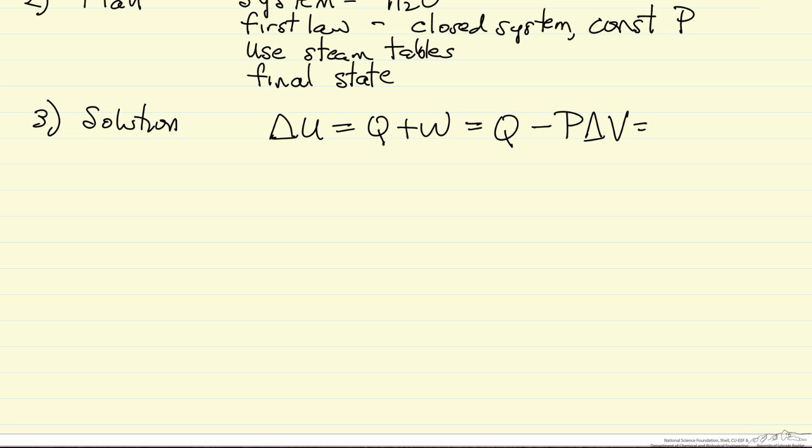And I'm going to rewrite this as minus delta PV, and the reason I'm doing that is because I can now rearrange this equation: delta U plus delta PV is equal to Q, and delta U plus delta PV is delta H. So this means I can use delta H values from the steam tables.